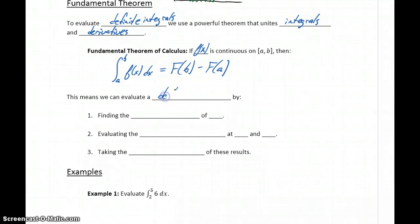So this means, essentially, to evaluate a definite integral, we can do that by first finding the antiderivative of the given function, so of our function lowercase f of x. So we find that antiderivative, which is capital F of x, and then evaluating the antiderivative at both a and b, and then finding the difference of those two results.